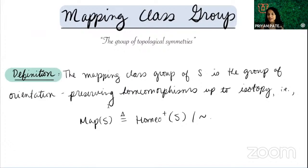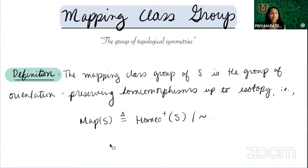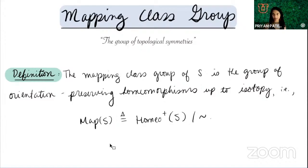My next slide is a compare and contrast for people who don't know much about finite type surfaces and what's different in infinite type mapping class groups. I'm going to go through a few similarities and differences without spending too much time, since I want to get to some theorems at the end. If you're really interested in one item, just stop me if I'm going too fast.